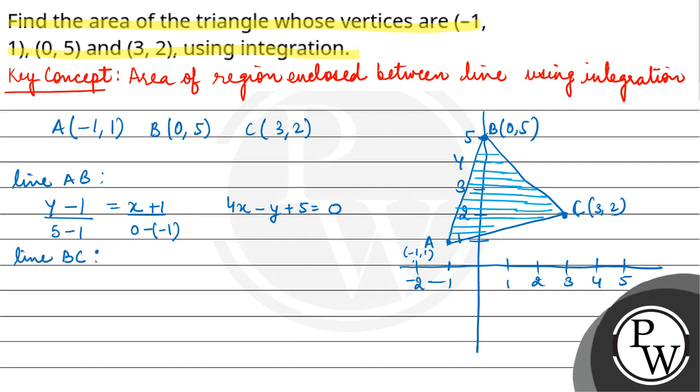The second line is BC. For BC, Y minus 2 upon 5 minus 2 equals to X minus 3 upon 0 minus 3, so from here we get X plus Y equals to 5, so this is X plus Y equals to 5.